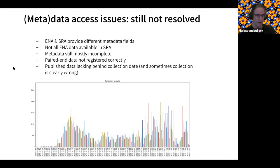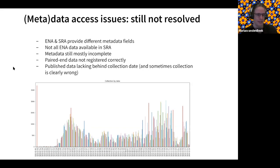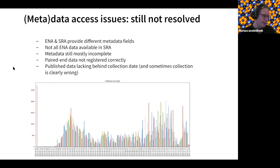Paired-end data is occasionally not fully available or is only available through the cloud service of the SRA, which is an accessibility problem. Some of these things are clearly wrong — looking at collection by date, you can see the first and second peaks of cases, but there are some samples apparently collected in 1992, and a huge swath with a random date of 4th of January. These remain challenges.